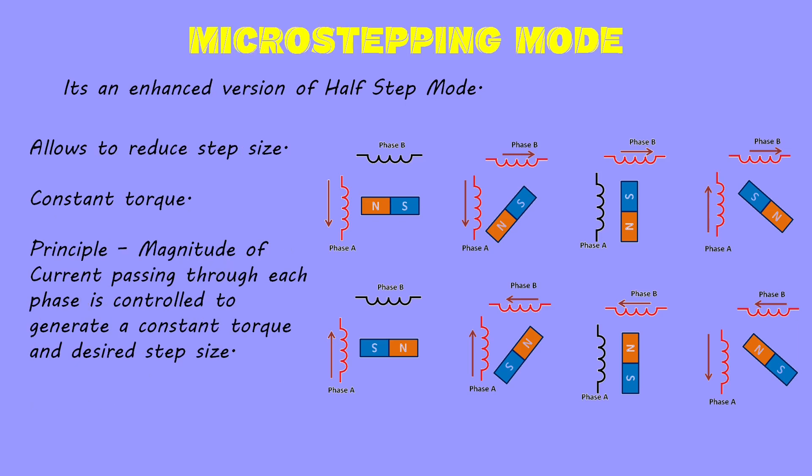Micro stepping mode: it's an enhanced version of half step mode, as it allows reducing the step size even further while maintaining a constant torque output. This is achieved by controlling the current passing through each phase of the coil. As we are controlling the current in all the coils, the driver for this mode is quite complex. This mode is the most widely used mode in stepper motors.